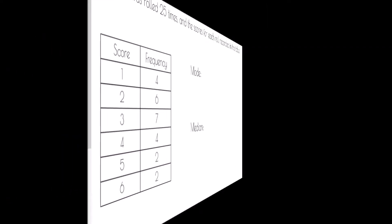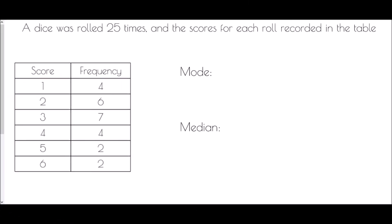A dice was rolled 25 times and the scores for each roll recorded in the table. This is a frequency table — it has a column which tells us how many times each score occurred. Frequency means how many times it happened. So this is telling us that we scored one four times, two six times, three seven times, and so on.